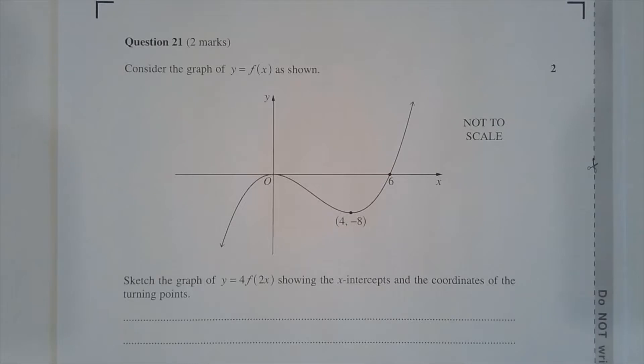Question 21. Consider the graph of y equals f of x as shown. Sketch the graph of y equals 4 f of 2x showing the x-intercepts and the coordinates of the turning points.